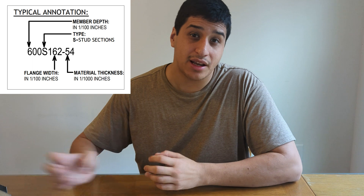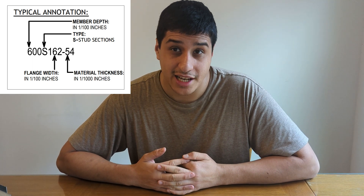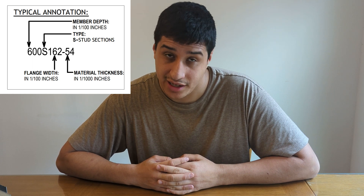In this case it's a 162 flange, so it's about one and five-eighths inches. The fourth part of the naming convention is the gauge thickness, expressed in mills — a mill is a thousandth of an inch, so 0.001 inches.